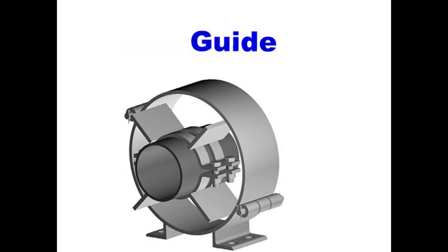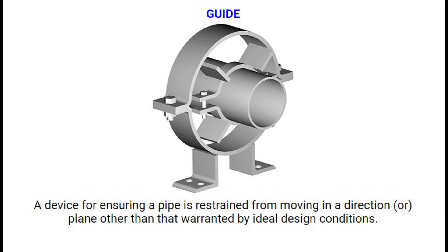Number 4: Guide. Pipe Supporting Guide is a device for ensuring a pipe is restrained from moving in a direction or plane other than that warranted by ideal design conditions.